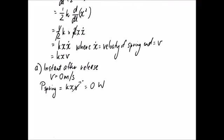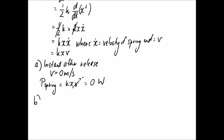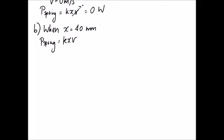For part b, we're asked to find what happens when the spring is at half of its initial compression. So it started at 80 from above. So we're asked what happens when the spring compression is just 40 millimeters. So again, we have our equation where P spring is equal to kxv. This time, we know what the spring constant is. It was given in the question. x is 40. We need to find what the velocity is. It's not going to be zero this time. It is going to be moving. So for that, we can use our work energy equation.